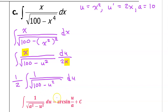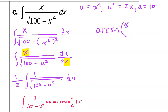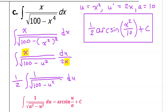Remember that there is no 1 over a in the front of the arcsine rule — this is the only one that doesn't have it. So we begin by writing arcsine of u over a. But u is x squared, so we write x squared over 10 plus c. Don't forget that we have this one-half sitting out in the front, so we bring that down. Here's the final answer for part c.